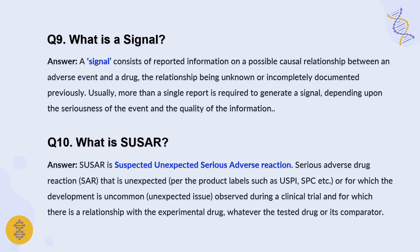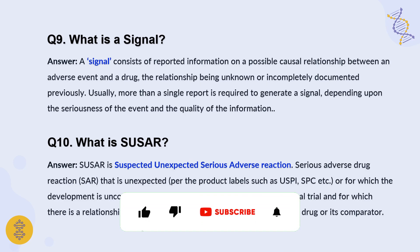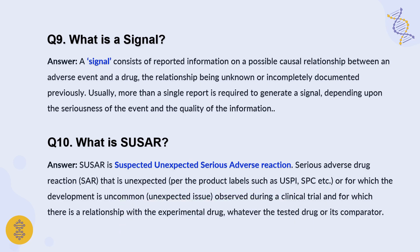Another key term interviewers will ask about is SUSAR — Suspected Unexpected Serious Adverse Reaction. In pharmacovigilance, a SUSAR refers to a serious adverse drug reaction that is unexpected, observed during the clinical trial phase, for which the relationship to the experimental drug or its comparator is suspected but not yet confirmed. Understanding these pressing pharmacovigilance concepts helps you tackle any situation that may arise in the field.